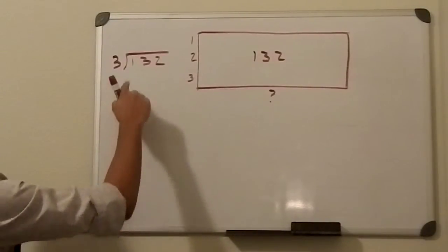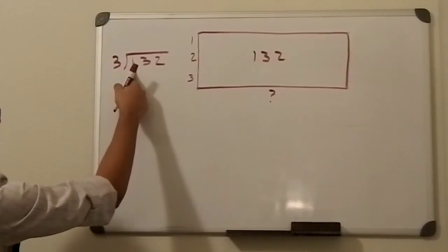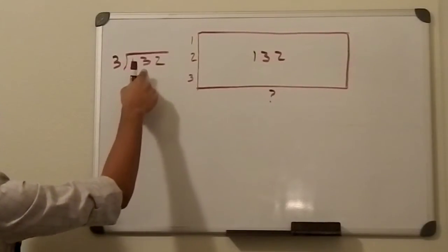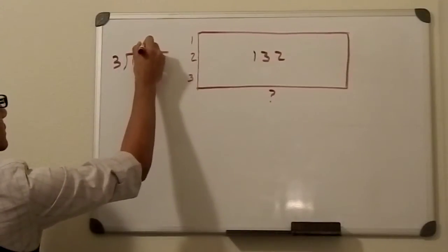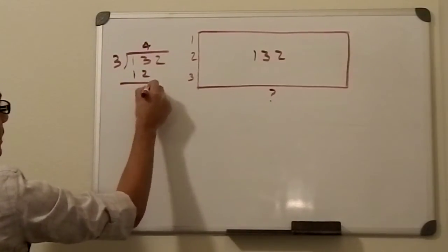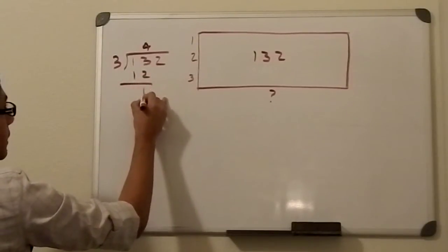Since we can't divide 3 into 1, then we'll look at the second number, 13. This goes in 4 times. 4 times 3 is 12. We subtract that, get 1, drop down the 2.